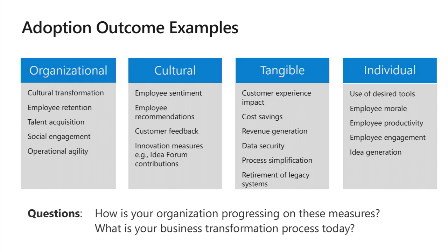Some outcome examples: from an organizational point of view, employee retention is better because people are getting the products they wanted. There can be a cultural change where innovation makes people happier. Tangible results directly measurable like cost savings — using a single product means you don't have to pay for additional training resources. And there are individual outcomes: a lot of people wanted this tool, so you have a group of people that are happier, which is a morale outcome.